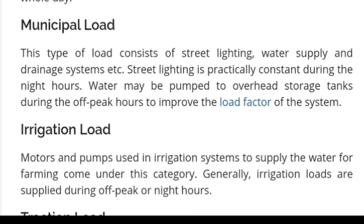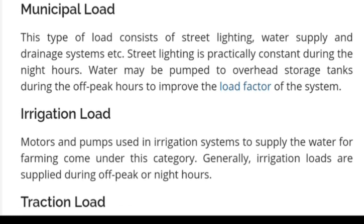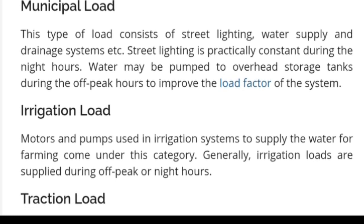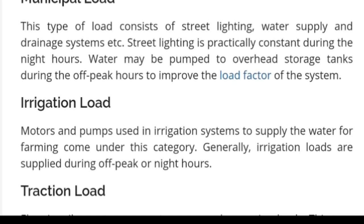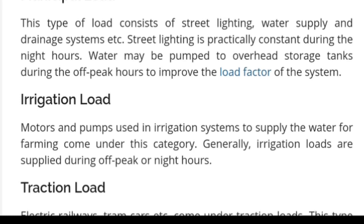Irrigation or agriculture loads refer to electric power needed for motors and pumps used in irrigation systems or agriculture fields to supply water for farming. Generally, irrigation loads are supplied during off-peak or night hours — typically about 7 hours a day. Load factor is 0.2 to 0.25, demand factor is 0.9 to 100%, and diversity factor is 1 to 1.5.